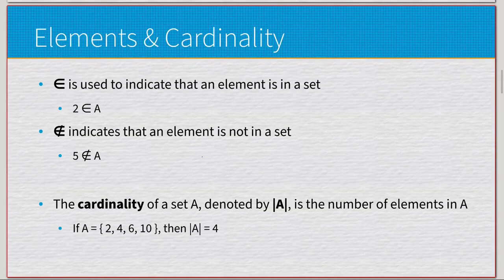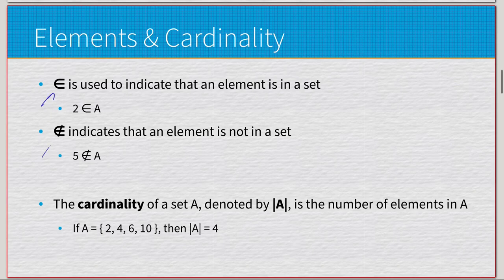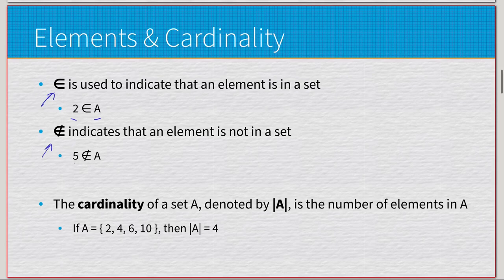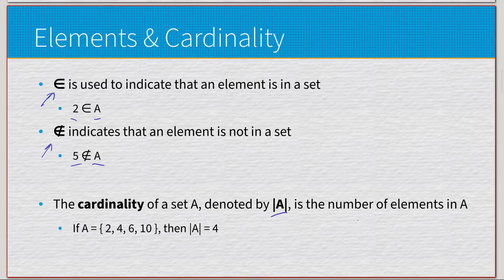For sets we have two critical aspects early on: elements and cardinality. We have two symbols for membership — one that looks like a stylized 'e' means the element is in the set (e.g., two is an element of set A), and the same symbol with a slash means not in the set (e.g., five is not an element of set A). Cardinality, denoted with absolute-value-style bars, gives the number of elements in a set — so for A equals {2, 4, 6, 10}, the cardinality of A is four.